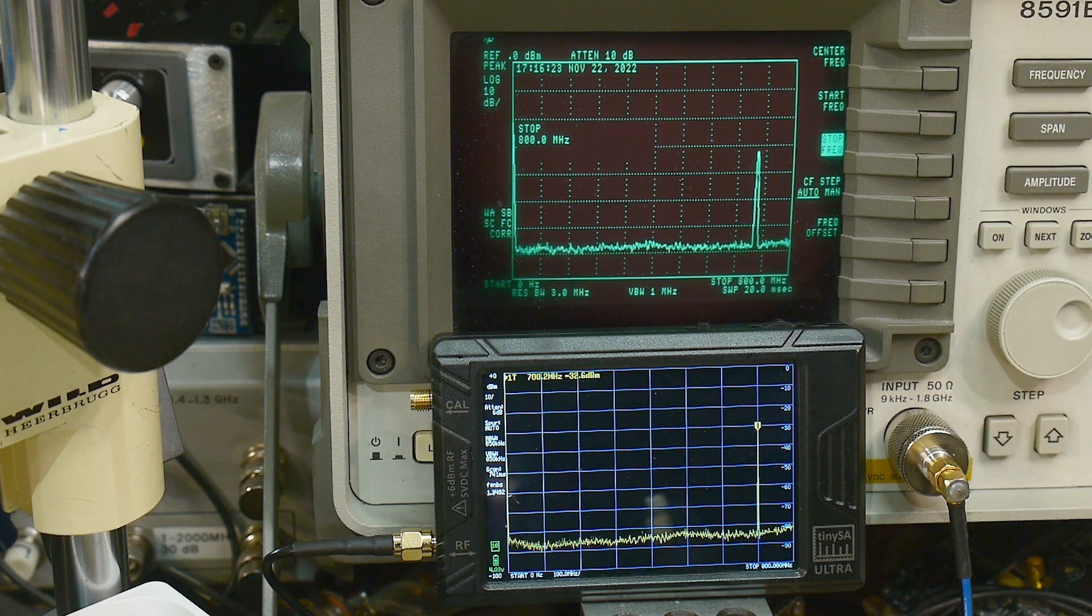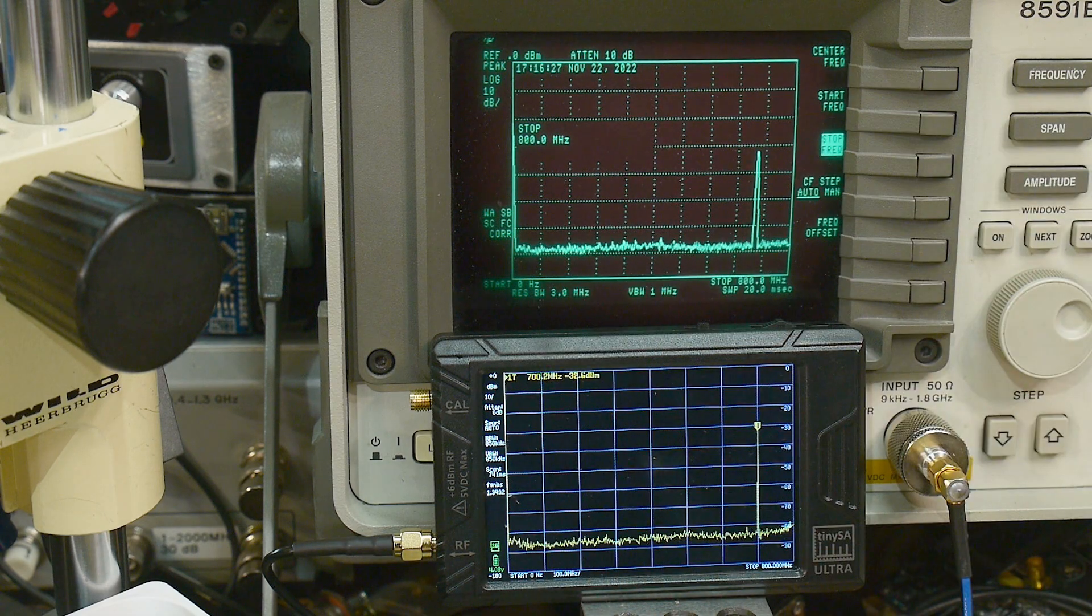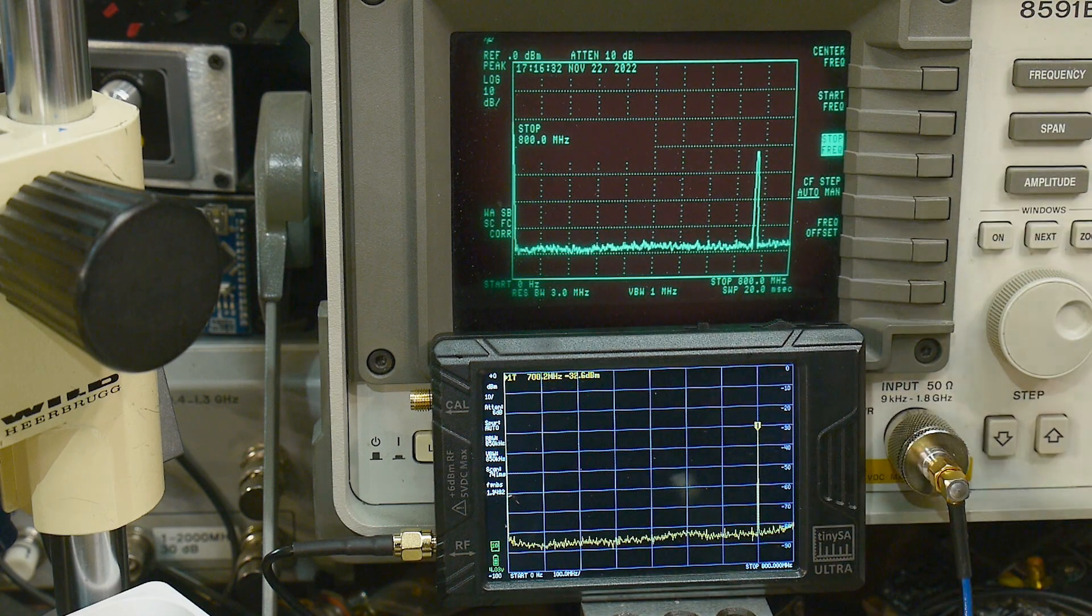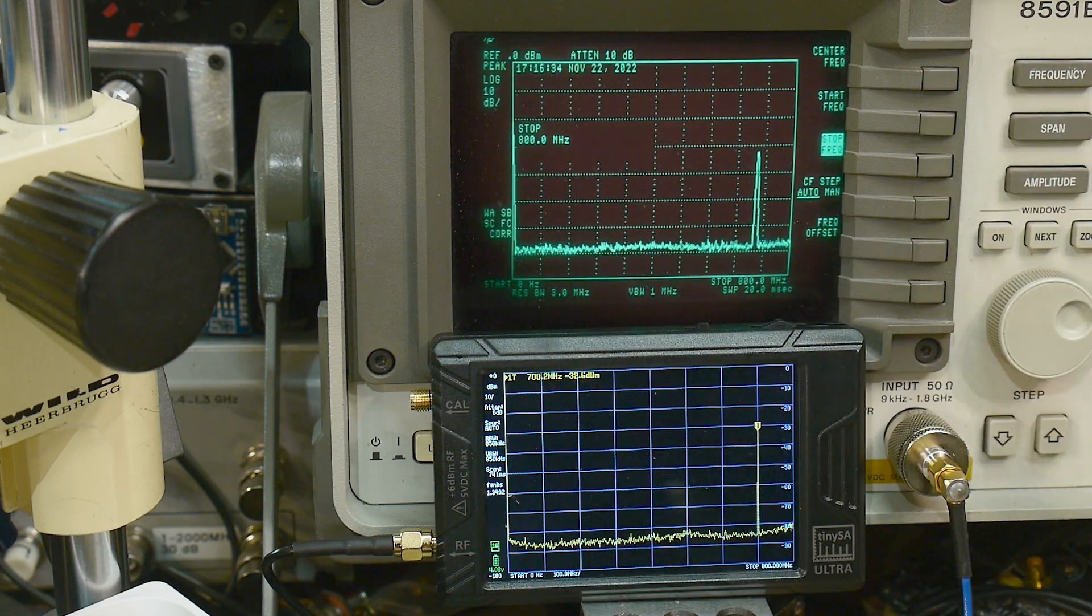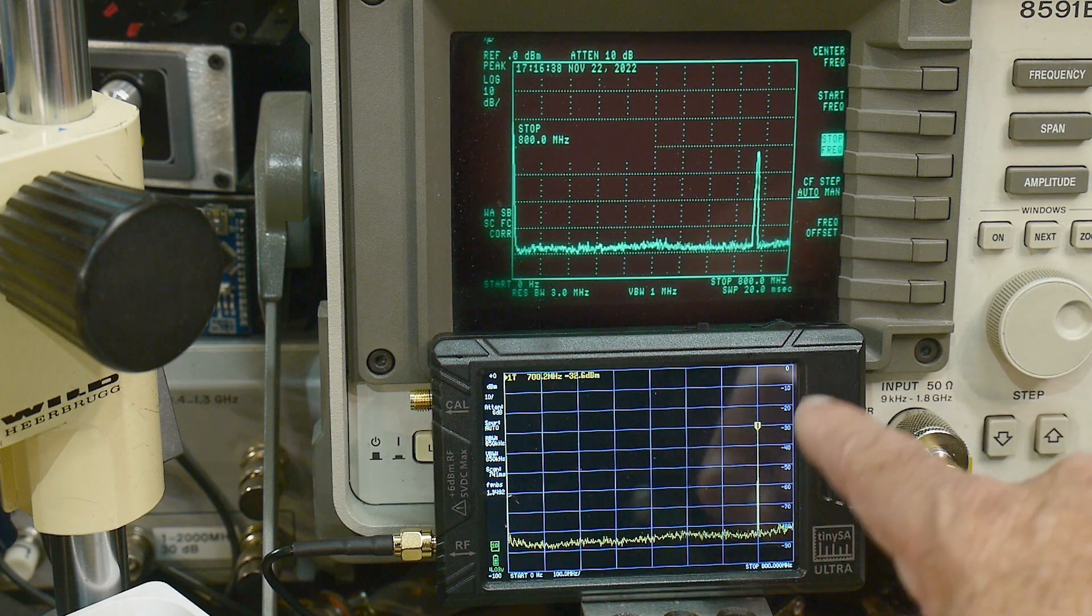I need to count - in order for this it's 10 divisions in this direction. This direction is 10, this direction 8. Let me change this span - stop frequency to one gigahertz. There's seven. We'll go backwards again: one, two, three, four, five, six, seven, eight.